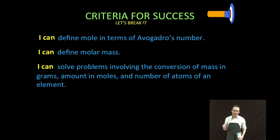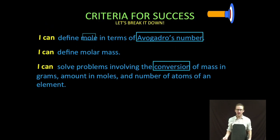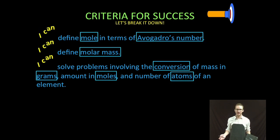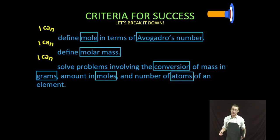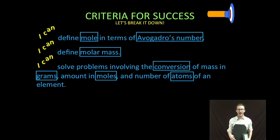Alright, breaking it down as always: first thing we're gonna do is define what the heck a mole is in terms of Avogadro's number. Two, we are then going to define what is known as molar mass. And then three, we're gonna solve some problems involving the conversion of mass in grams, amount in moles, and number of atoms of an element.